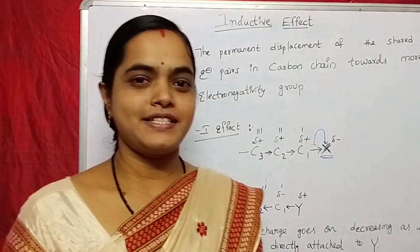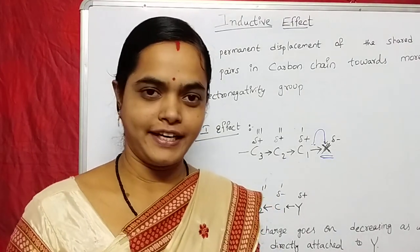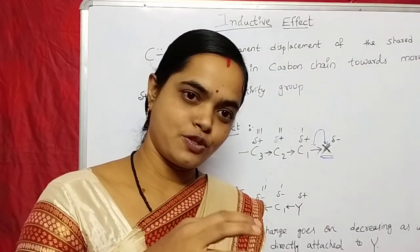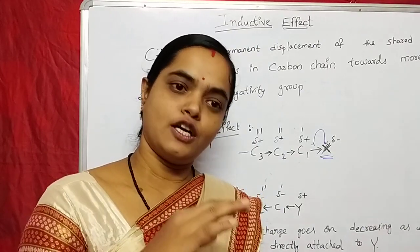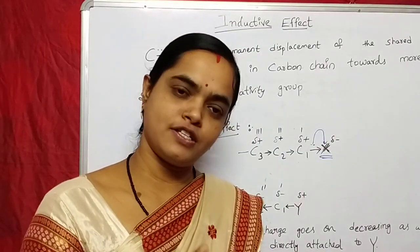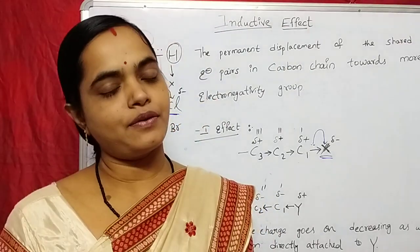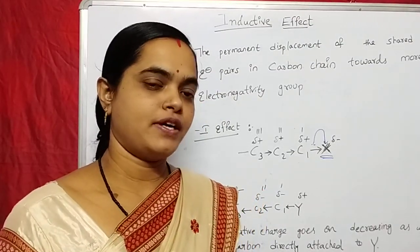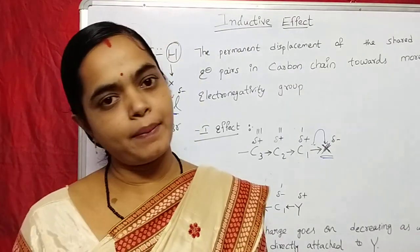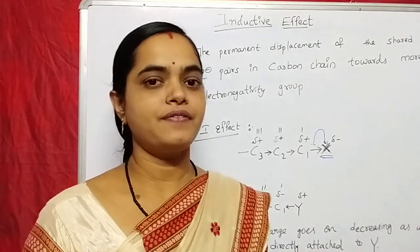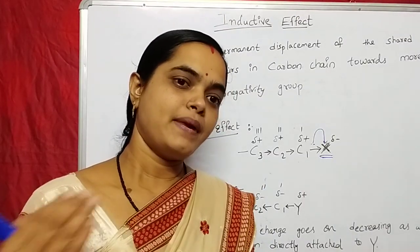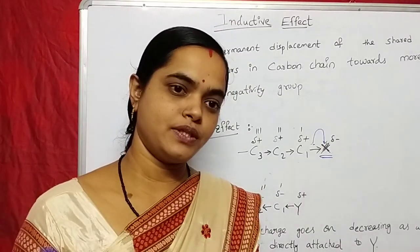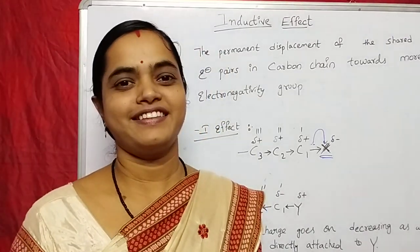I hope you understand the topic. What is the inductive effect? That is clear. When an electronegative atom is attached to the carbon, it attracts electrons, so the carbon gets a partial positive charge and the electronegative atom gets a partial negative charge. These two types: minus I effect — if the electronegative atom is attached to carbon — and plus I effect — if electron donating groups are attached to the carbon chain. Thank you.